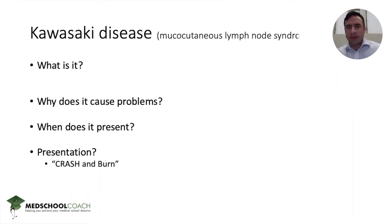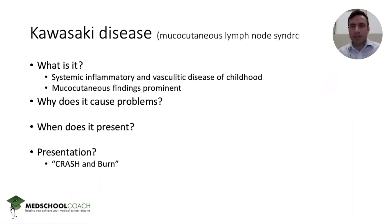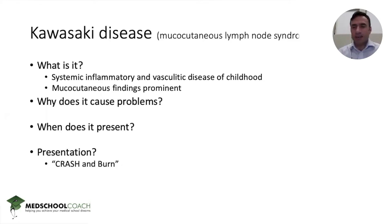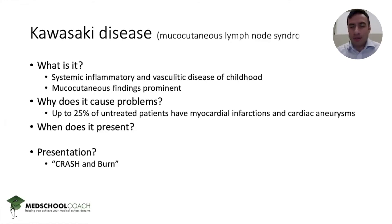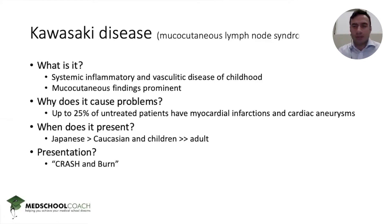Kawasaki disease, otherwise known as mucocutaneous lymph node syndrome, is a systemic inflammatory and vasculitic disease of childhood with prominent mucocutaneous clinical findings. Because these findings can be seen on physical exam and the diagnosis made clinically — and there is associated mortality — it is very highly tested. Up to 25% of affected patients can have myocardial infarctions and cardiac aneurysms. Epidemiologically, it's most common in those of Japanese ancestry but can be seen in Caucasians, and it is predominantly a disease of childhood.